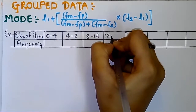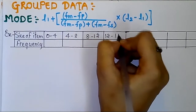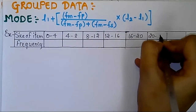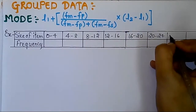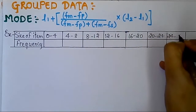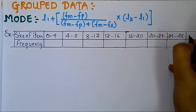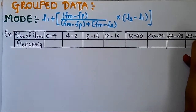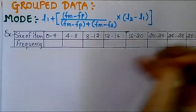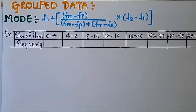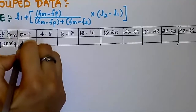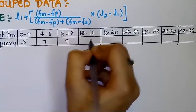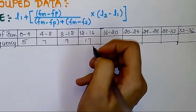Here the size of item and its frequency is provided in the question: 0 to 4, 4 to 8, 8 to 12, 12 to 16, 16 to 20, 20 to 24, and so on — with a difference of four between these two values. The corresponding frequencies are 5, 7, 9, 17.